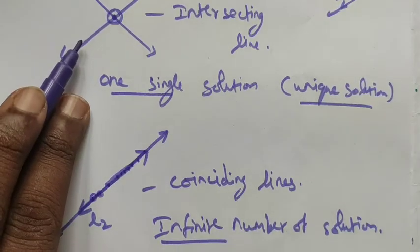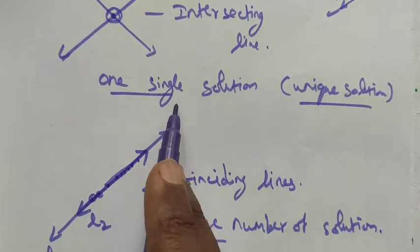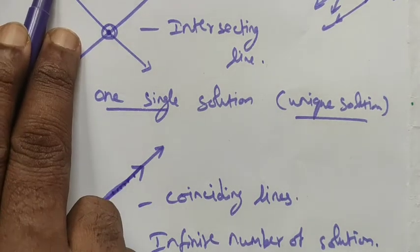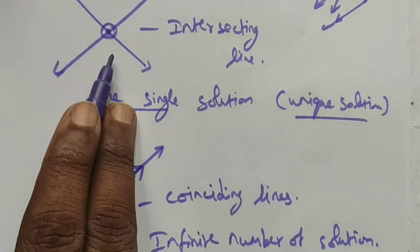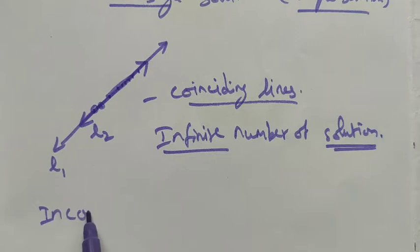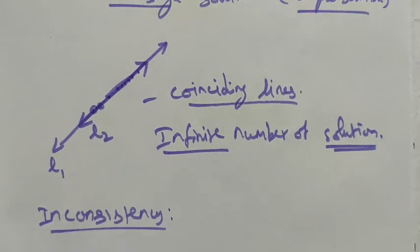These are the examples for consistency. If two lines are intersecting, we get a solution; if they coincide, we also get a solution. Consistency means we surely have a solution — whether one solution or an infinite number of solutions. So intersecting gives one solution and coinciding gives infinite solutions.